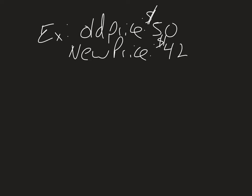Let's say I'm selling something and originally it costs $50 and then it goes on sale. And we decide $42 is what we're going to sell it for.